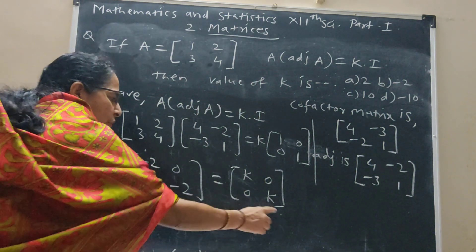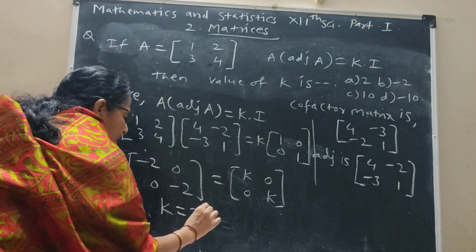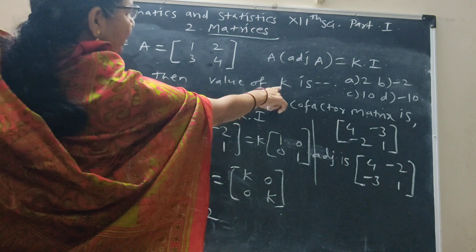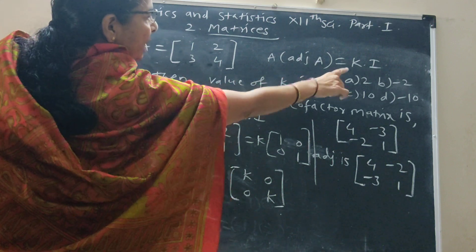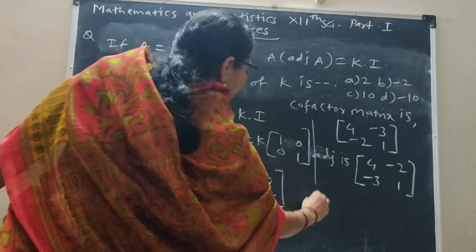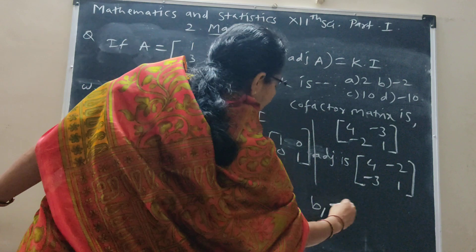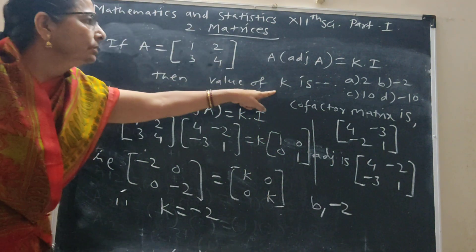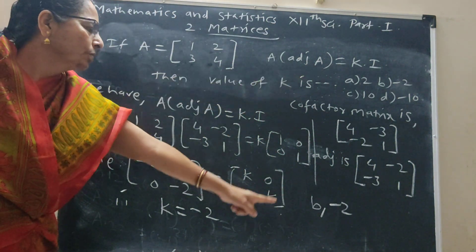Again, -2 equal to k. Value of k is -2, which is option B. So, final answer B: -2.